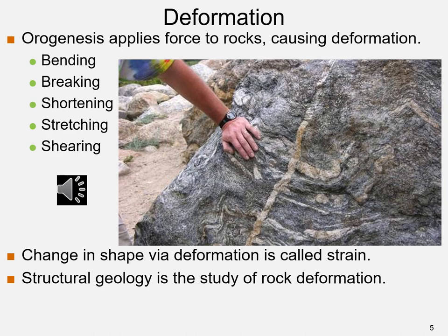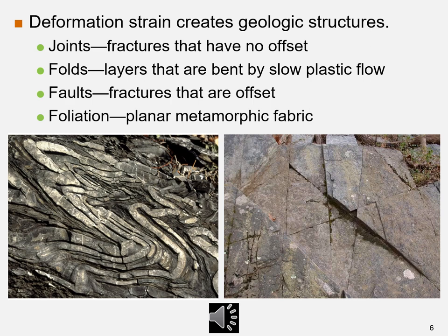Deformation strain creates geologic structures such as jointing, folds, faults, and foliation. Joints are fractures that have no offsets. Folds are layers of rock that are bent by slow plastic flow by compression. Faults are fractures with offsets. Foliations are physical and chemical changes in the fabric of the rock due to heat and pressure.